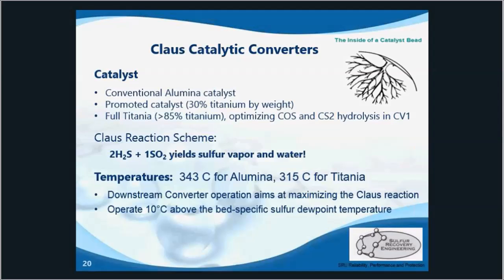The first converter always runs hotter in order to maximize hydrolysis of COS and CS2, meaning converting these unwanted byproducts back into SO2. SRE recommends a temperature of 343 degrees Celsius for a full alumina bed and 315 for a full titanium catalyst because the titanium is more sensitive. For a mixed bed it could be anywhere between there, like maybe 325 or 330.